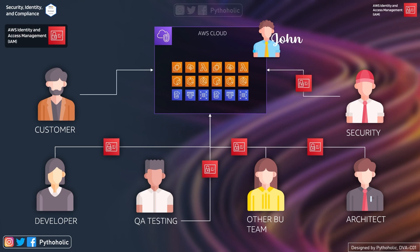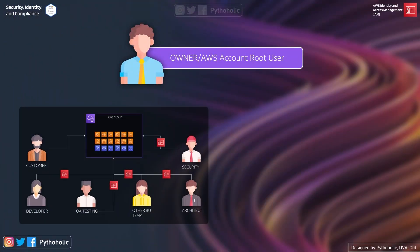Provisioning access and managing permissions — who can access what and how much permission they should have — is not simple. AWS is going to let you use its services only if you have permission to execute the operations you want. You, as the owner, will create the AWS account, which gives you root access. For your users, you create IAM users and IAM user groups to manage multiple users in the same or different groups.